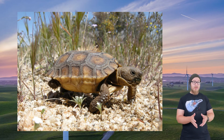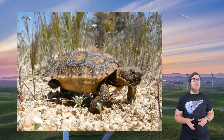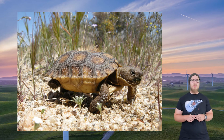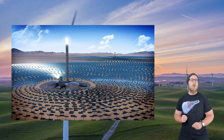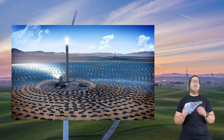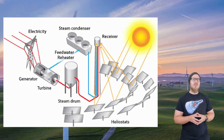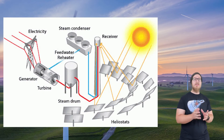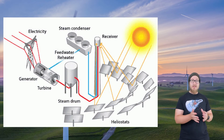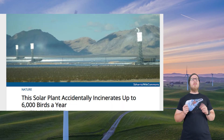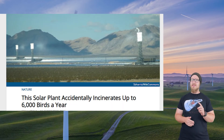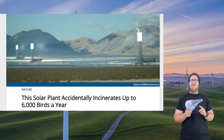Before a solar farm is built, all the desert tortoises are moved to another area, but even this results in high mortality, as they have very specific habitat choices. Another form of solar power is the solar tower, which uses a collection of mirrors to focus sunlight onto a tower to create steam, which spins a turbine. These are very bright objects that attract curious birds and burn them, which is unfortunate.